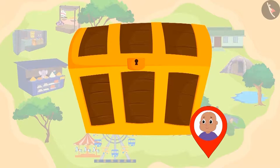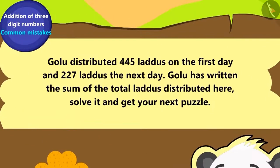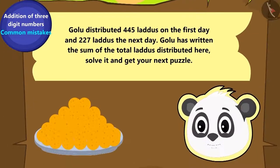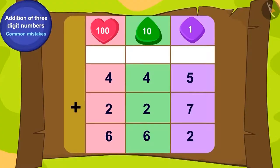Once all the puzzles are solved, Bablu will find Raju's hidden object. Here is Bablu's first puzzle: Golu distributed 445 laddus to his friends on the first day and 227 laddus the next day. Golu has written the sum of the total laddus distributed here. Solve it and get your next puzzle. Is this addition correct? Yes, you have rightly found out that this addition is incorrect.